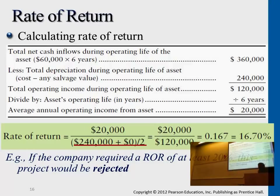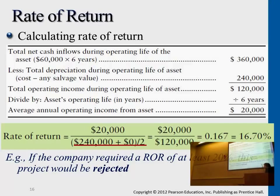We use this to compare against different investment projects. The higher the rate of return, the better and more attractive the project is. If the business sets a minimum rate of return threshold — for example 20% — any project below that will be declined and rejected. In this case, they will reject it. If the rate of return threshold is 15% and your rate of return is 16%, then you will accept this project.